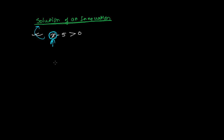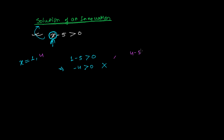So if I am putting x equals to 1, I will get 1 minus 5 is greater than 0, which means minus 4 is greater than 0. But this is wrong — this is false. So x equals to 1 is not the solution. If I am putting x equals to 4, then it will be 4 minus 5 greater than 0, which means minus 1 is greater than 0. Again, this is false.